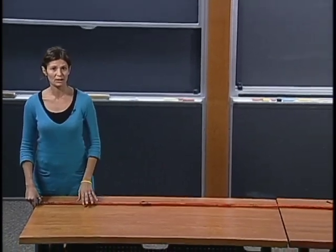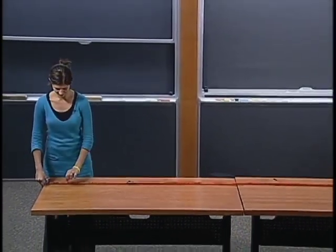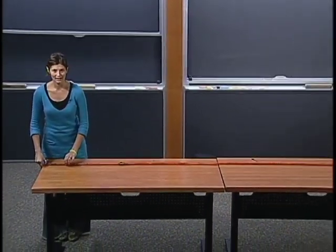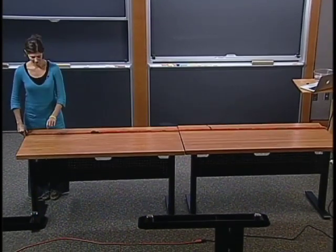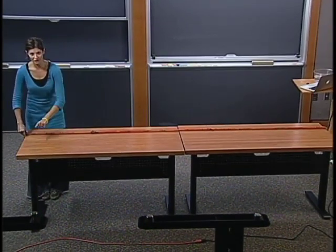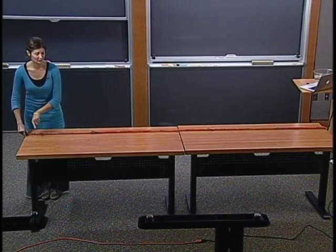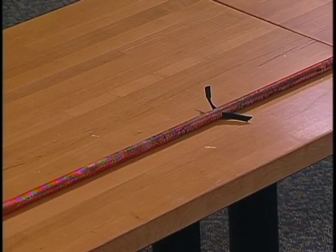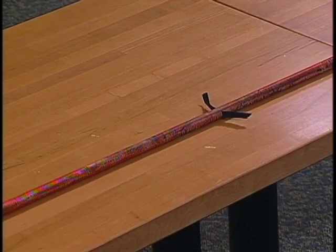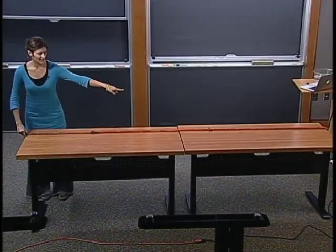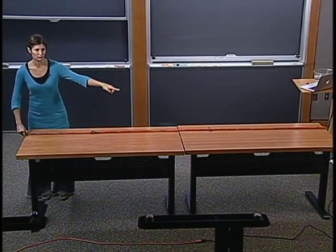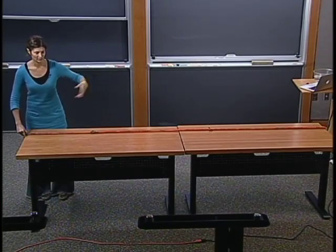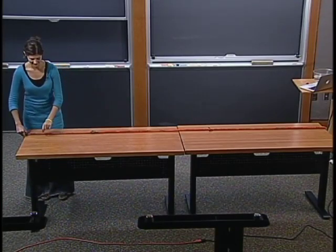Here, for example, I have a spring, and I can perturb it in this way. The perturbation in this direction is creating a pulse that is traveling in the perpendicular direction. If you look at the black tape in the center, you will notice that it's just moving back and forth. It's not actually moving with the wave itself.